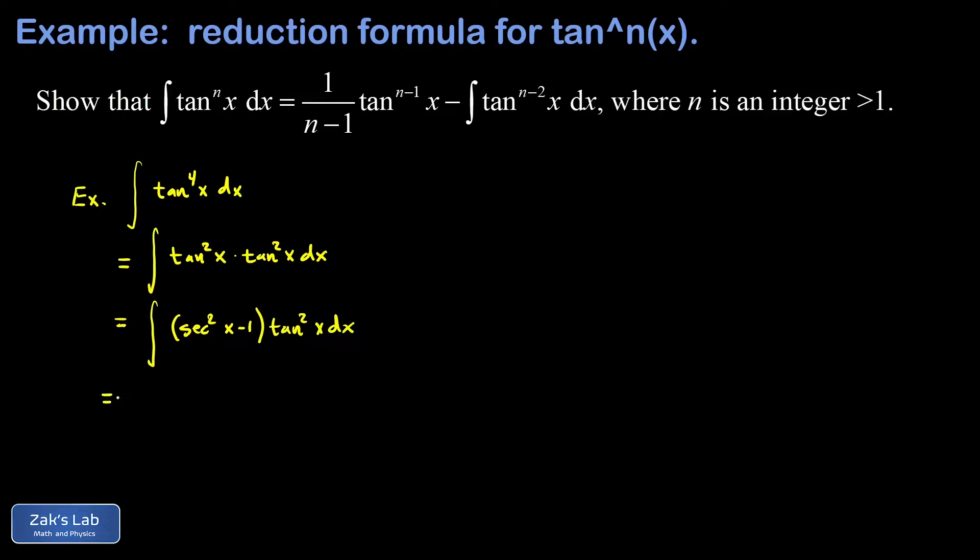And the advantage of this is that after we distribute the tangent squared to both of these terms, the first term is going to have the derivative of the tangent function, that's secant squared, stuck right on a power of the tangent function. So this first piece has the chain rule taken care of already because the derivative of the tangent function is sitting next to a power of the tangent function.